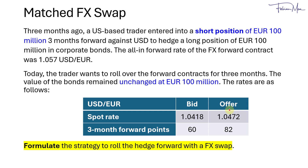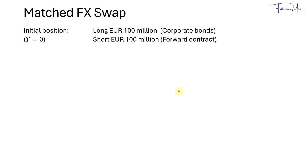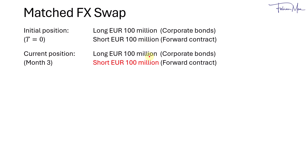To maintain the hedge, the strategy involves executing an FX swap. The trader held a long position of 100 million euros in corporate bonds, and to hedge this, they entered a short position of 100 million euros in a forward contract. Now, three months later, the current position remains the same — long 100 million euros in bonds — so to maintain the hedge, the trader needs to short 100 million euros in the forward contract. To roll this hedge using an FX swap, it involves buying 100 million euros in the spot market and selling 100 million euros forward. This results in what we call a match FX swap, because the amount bought spot and the amount sold forward are the same.